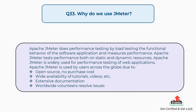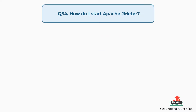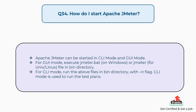Question 33: Why do we use JMeter? Apache JMeter does performance testing by load testing the functional behavior of software applications and measuring performance on both static and dynamic resources. It is widely used for performance testing of web applications due to being open source (no purchase cost), wide availability of tutorials and videos, extensive documentation, and worldwide volunteer support to resolve issues.